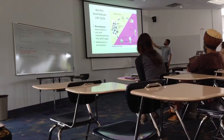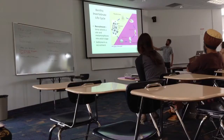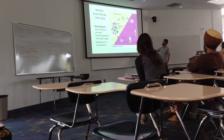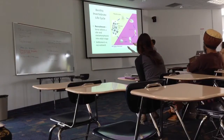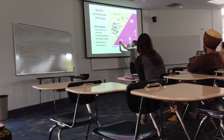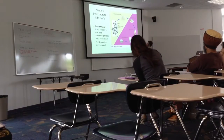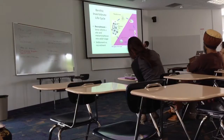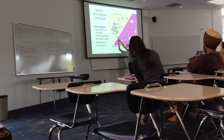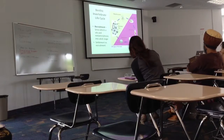The cyprid larvae feed little to none before they attach to the bottom. They find a place, often around other barnacles, and attach to the bottom in a process called settlement. Then they metamorphose into a juvenile, which eventually turns into an adult. This transition from juvenile to adult is called recruitment, or recruitment into the population. So settlement is when the larva settles onto the bottom, and recruitment is when that settler gets recruited into the adult population.